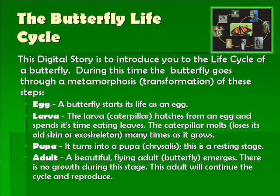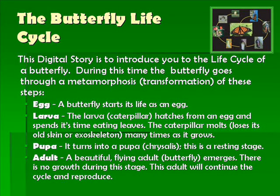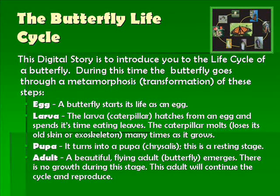I hope you have enjoyed this informative digital story about the life cycle of a butterfly. Let's review what we've learned. Butterflies must go through a metamorphosis of four different stages: the first being the egg stage, next the larva which is the caterpillar, then the pupa stage which we also call the chrysalis, and finally the adult stage where the beautiful butterfly emerges — and from there the cycle continues.